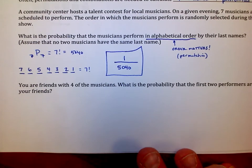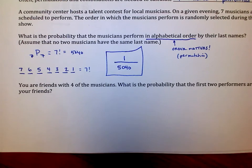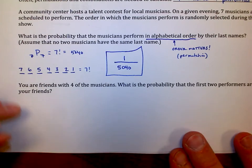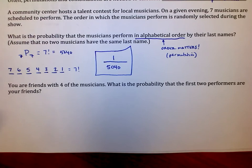Now, even more complicated, let's say that you're friends with four of the musicians. What is the probability that the first two performers are your friends? So in this problem, much more difficult here.